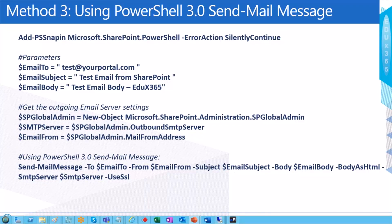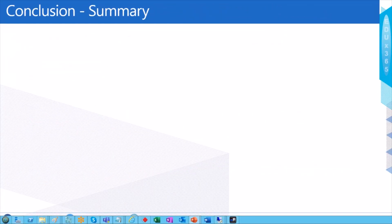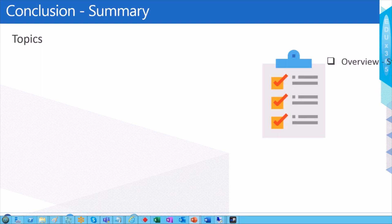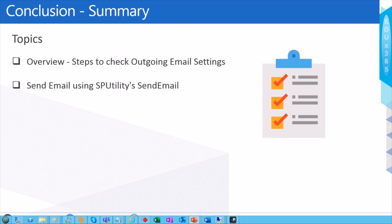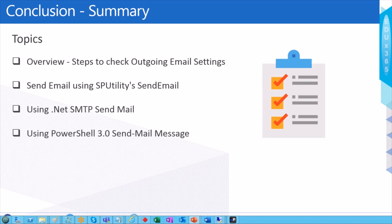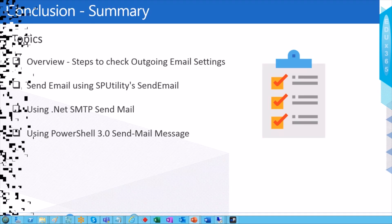Let's quickly recap what we covered in this video. We discussed why you need to perform such a test as part of a troubleshooting exercise, and I gave three examples of PowerShell-based approaches you can use to troubleshoot the outgoing email settings. That's all for me — thanks for watching.